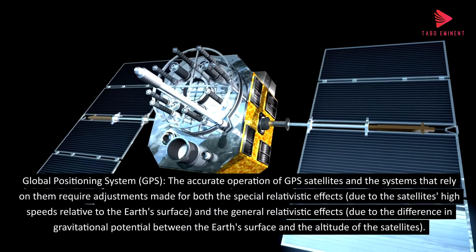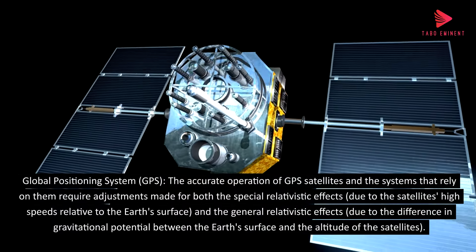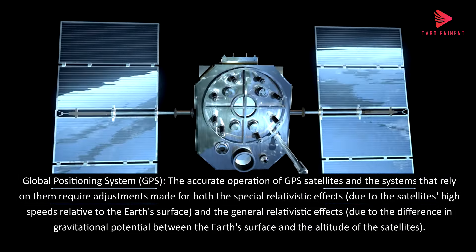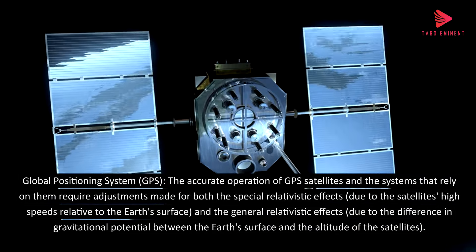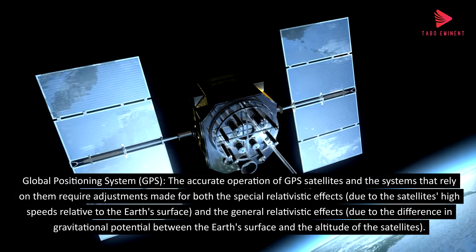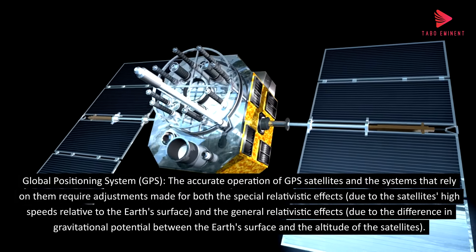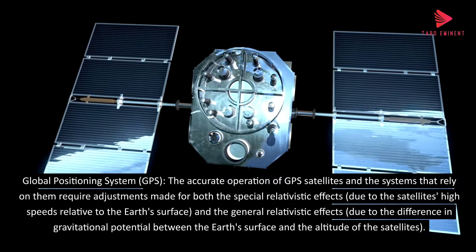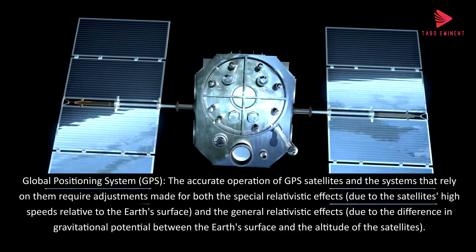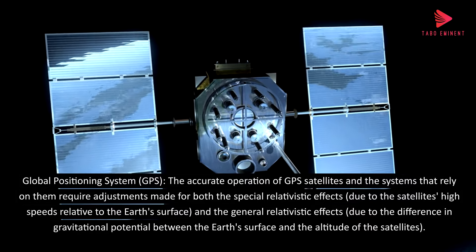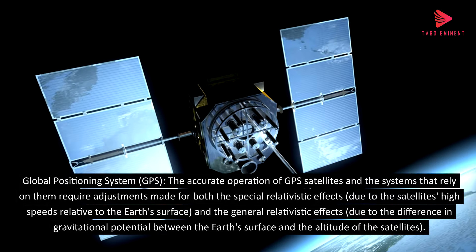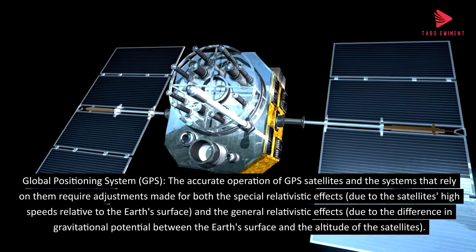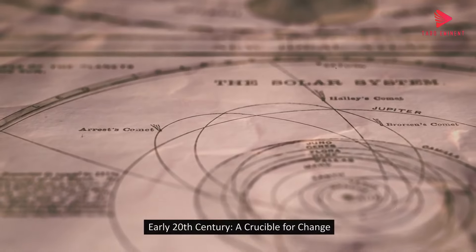Global positioning system — GPS. The accurate operation of GPS satellites and the systems that rely on them require adjustments made for both the special relativistic effects, due to the satellite's high speeds relative to the Earth's surface, and the general relativistic effects, due to the difference in gravitational potential between the Earth's surface and the altitude of the satellites.